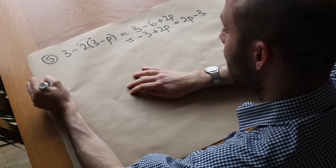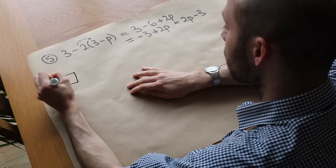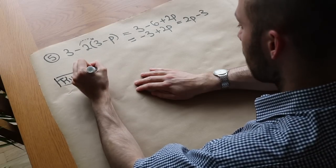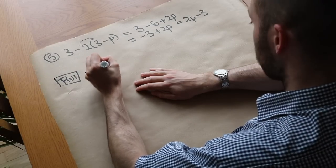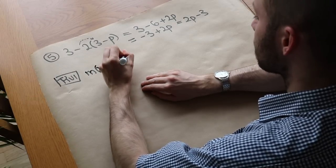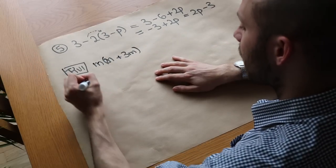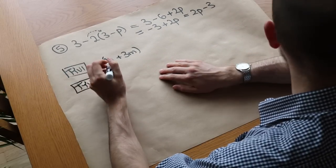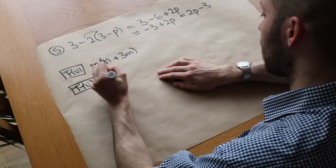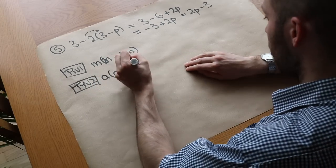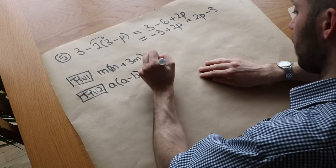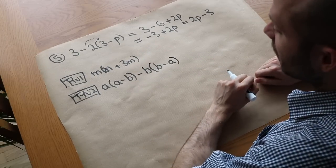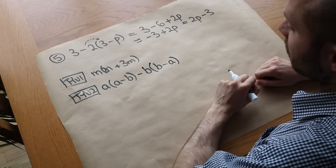Right, some test your understanding questions. So the first one here, we've got m times 2n plus 3m. So I want you to expand that. And then secondly, I want you to expand and simplify this expression here. So we've got a times a minus b, and we've got minus b lots of b minus a. So you may want to stop the video at this point to have a go at these two questions.